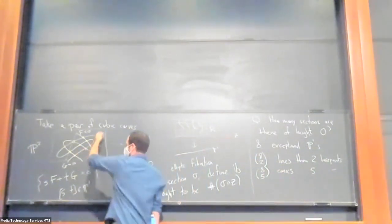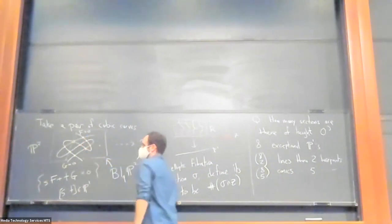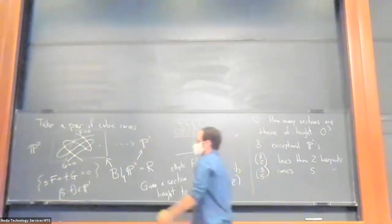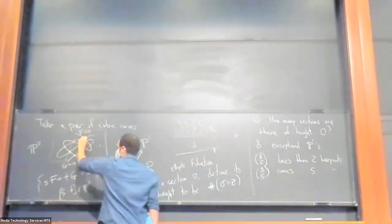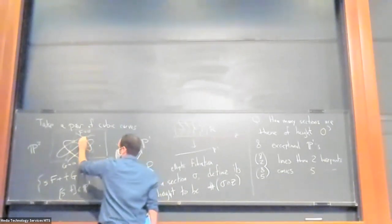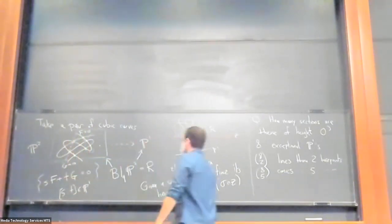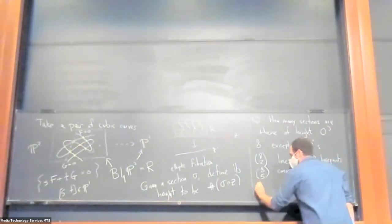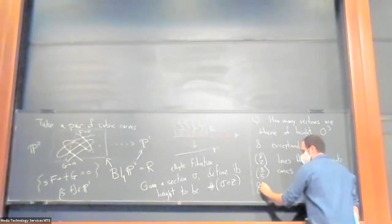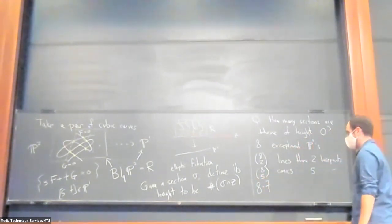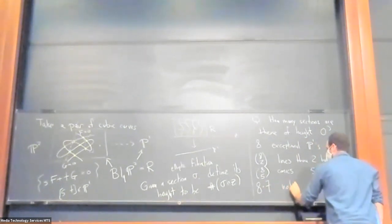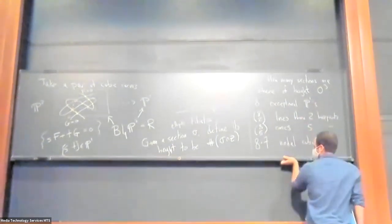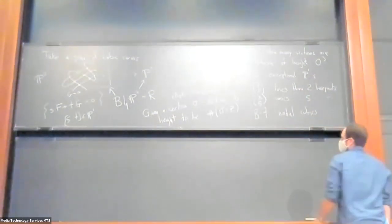So you can choose a nodal cubic where the node occurs at one of these base points. So in fact, when you blow up, it no longer has a singularity, it's actually a section. You can sort of set that up by just choosing a cubic which passes through one of the base points twice, and it passes through six others. So if you count those, you need to choose the node location and then you need to choose which points it will omit among the other base points. That gives nodal cubics when viewed in the plane, and when viewed in the blow up, they become sections.